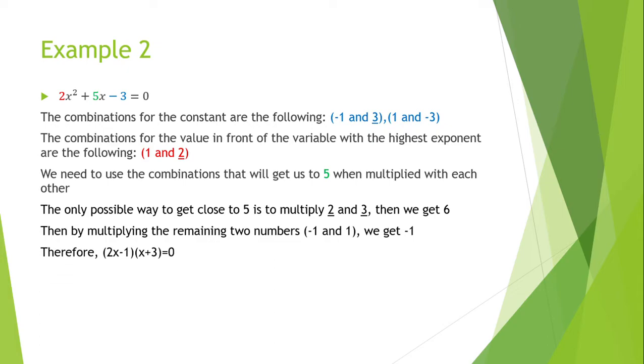Therefore, we have 2x minus 1 multiplied by x plus 3 equals 0. So from this, we get 2x minus 1 equals 0 and x plus 3 equals 0. Then, solving these two equations, we get that x equals a half and x equals minus 3.